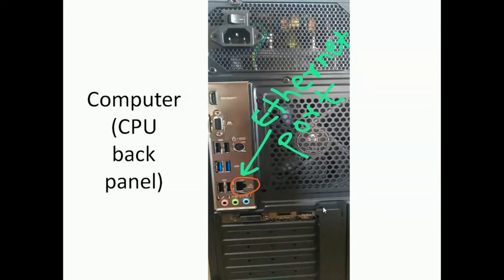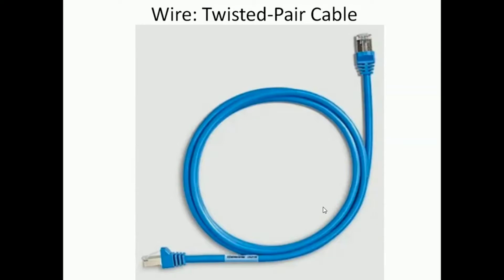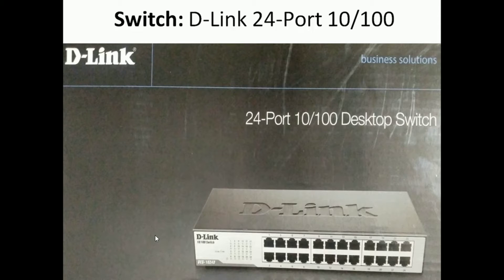This is the back panel of the computer or CPU. The Ethernet port is highlighted where I am going to connect the RJ45 connector of the wire. We are going to use this straight-through crimped twisted pair cable to form the network. One end connects to the Ethernet port of the CPU, and the other end connects to a port on the switch.